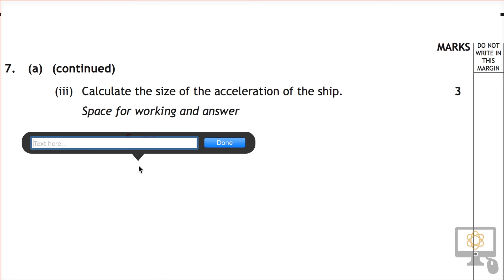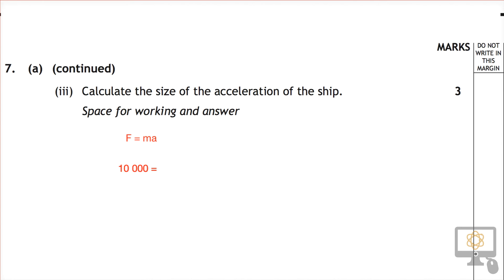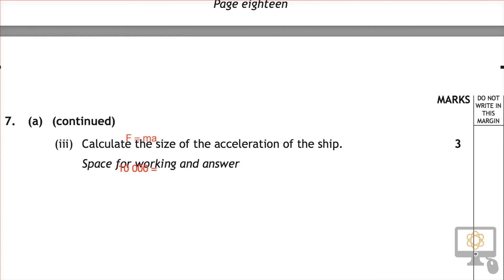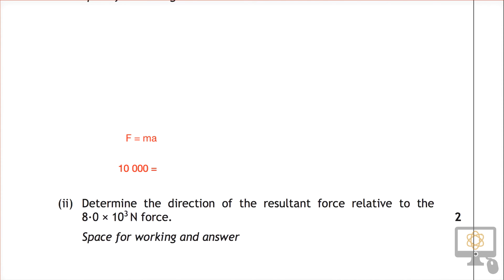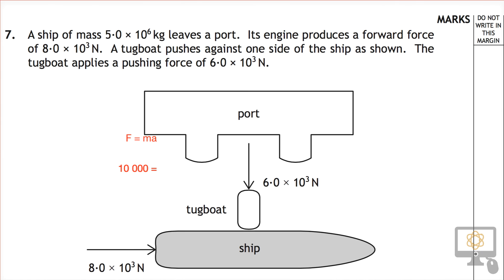Then we're going to put in the values below that. So the force was 10 times 10 to the 3, or we'll just say 10,000 Newtons. And that's equal to the mass of the ship. Now, I've forgotten what the mass of the ship is. So let's go up and have another look. The mass of the ship is 5 times 10 to the 6.